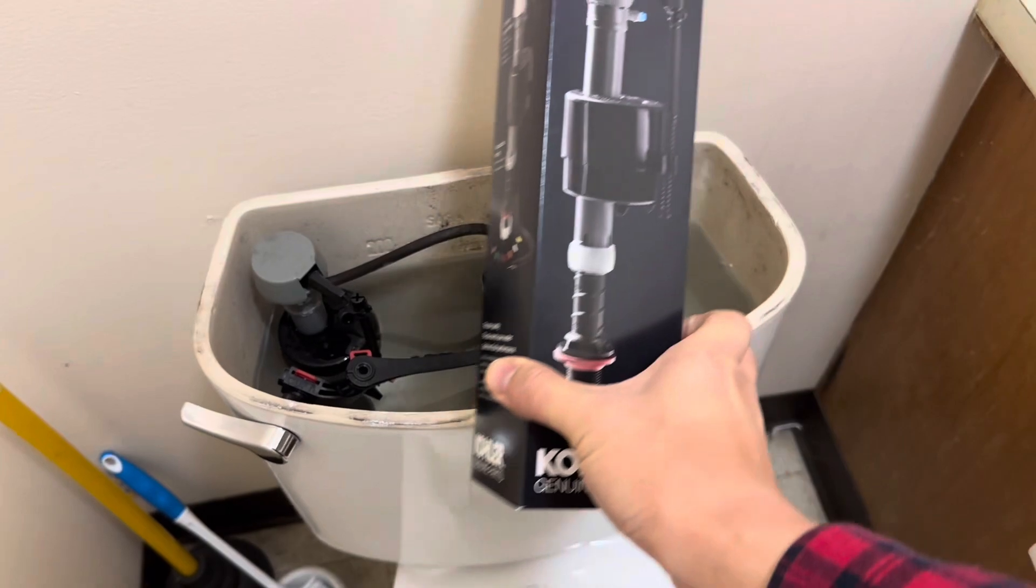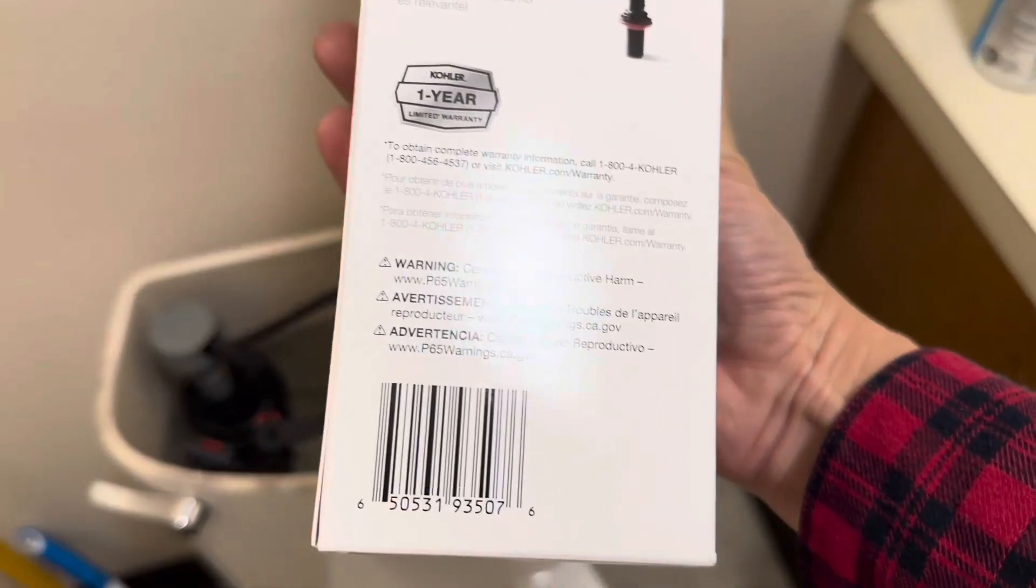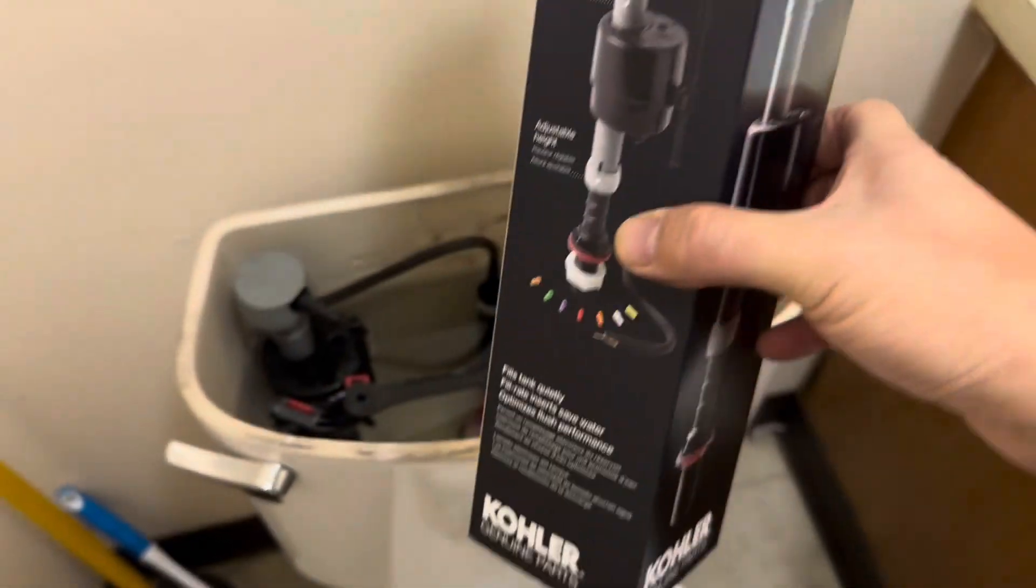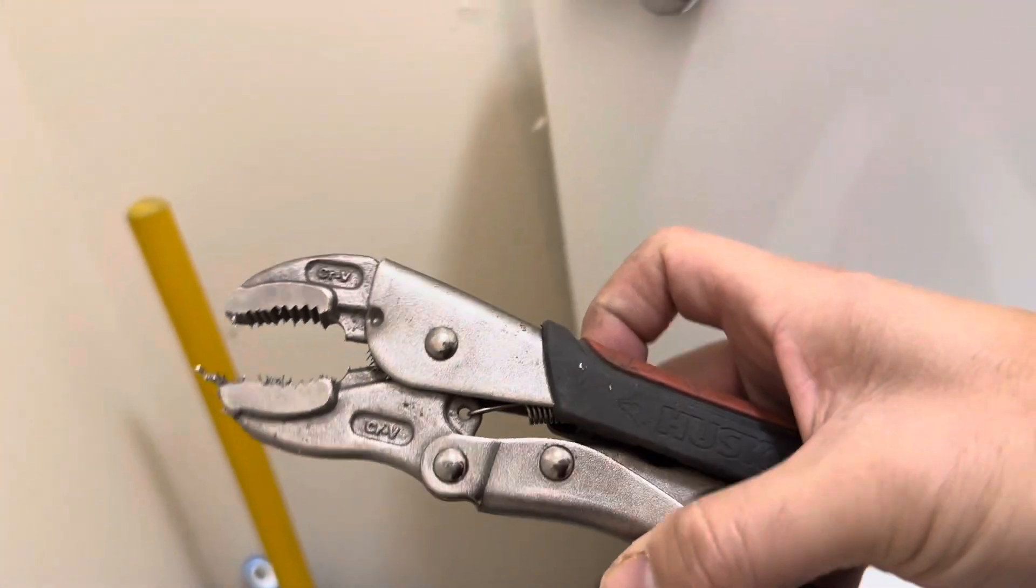We're just going to replace that with this one. There's a part that I'm using, it's like a universal valve. So we'll have to undo this water line here. The tools we're going to use is just a pair of vice grips and you can use anything. But let's go ahead and turn off the water first.